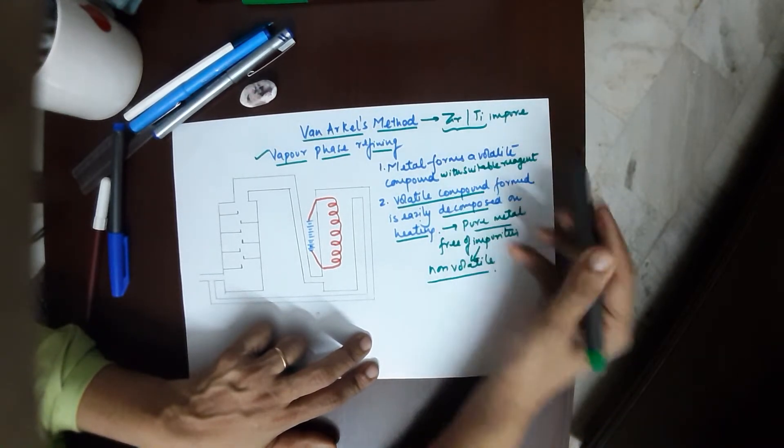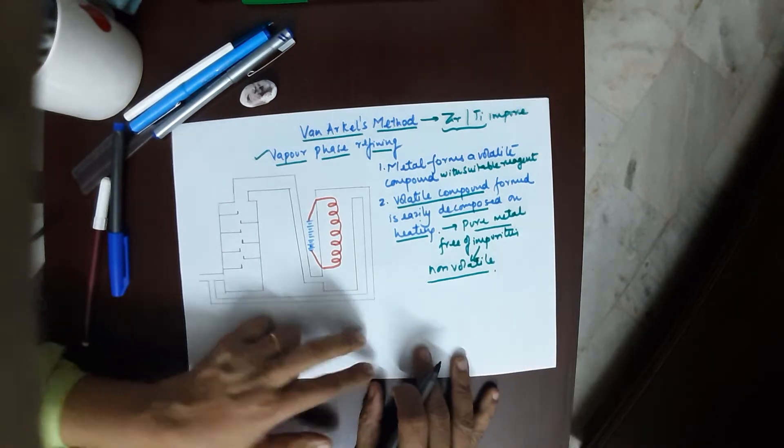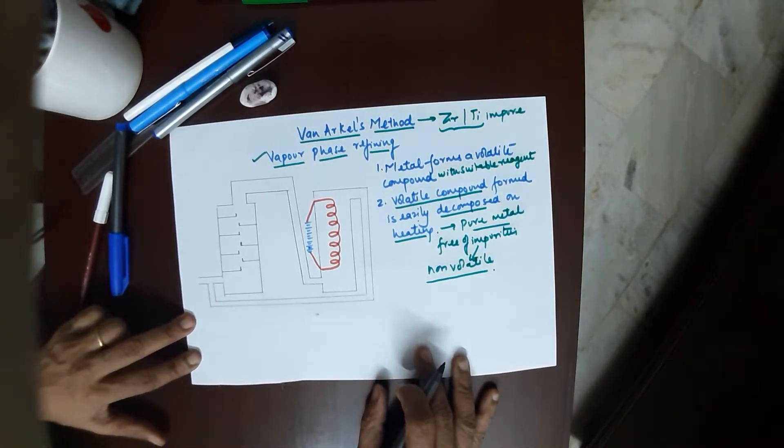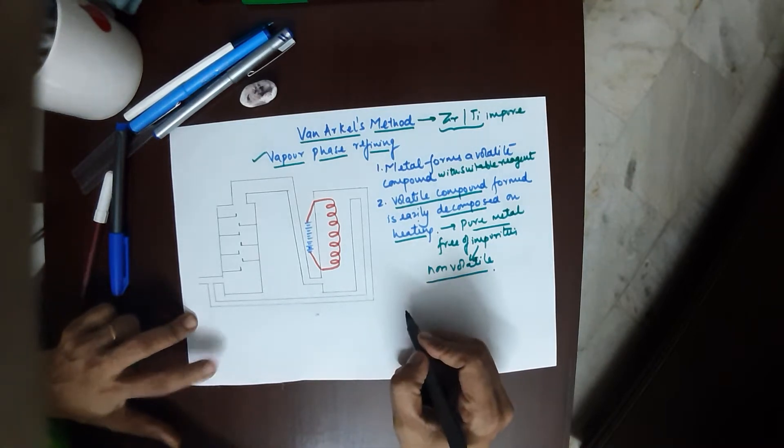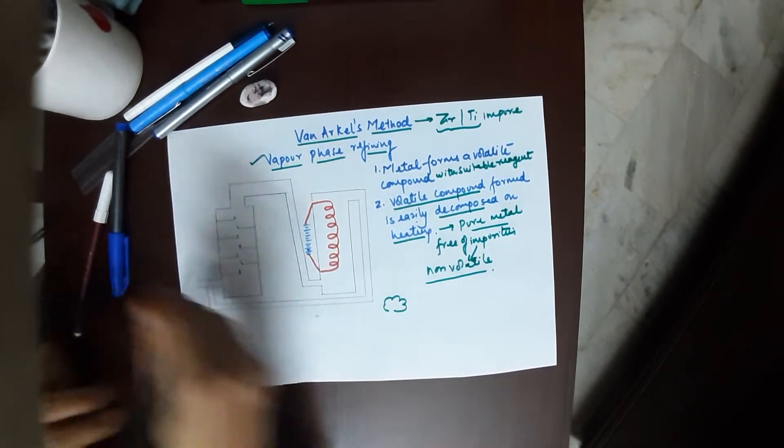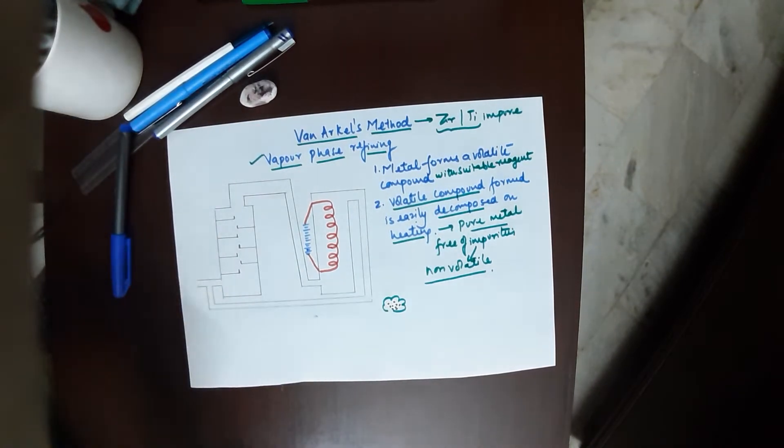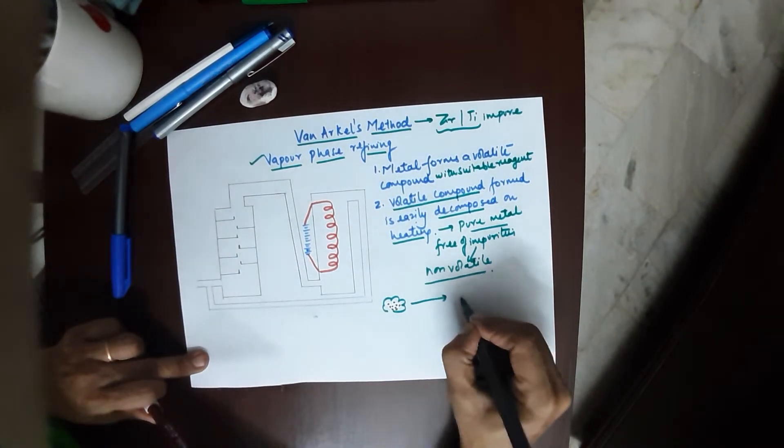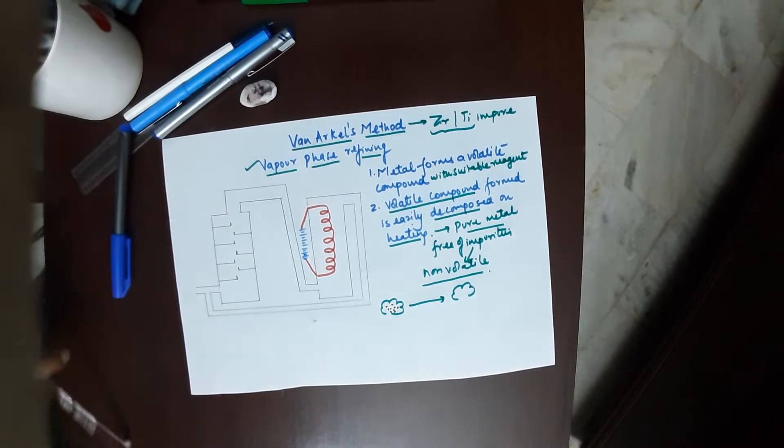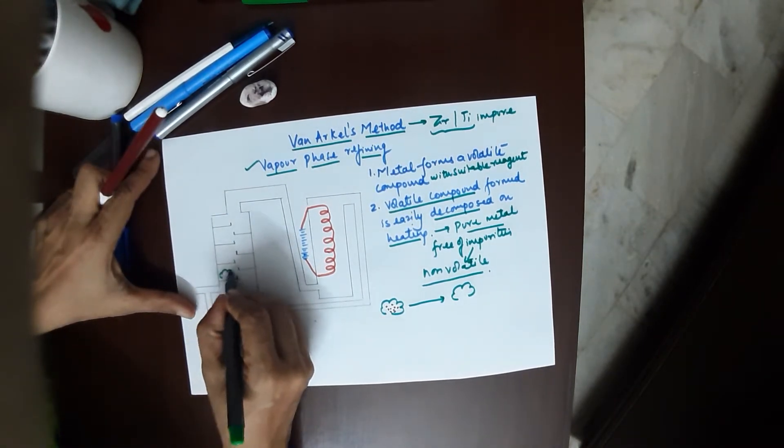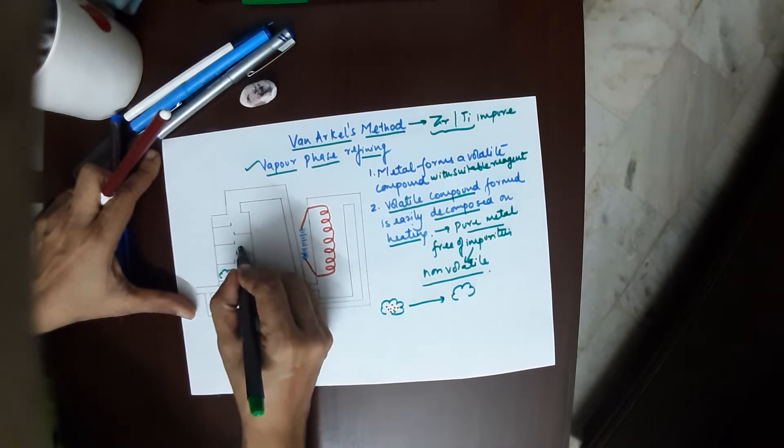This process can only be used if the impure metal has non-volatile impurities. Let's see how we go about it. I would be using impure zirconium, referred to like this with these as the impurities, while pure zirconium would be referred to like this.